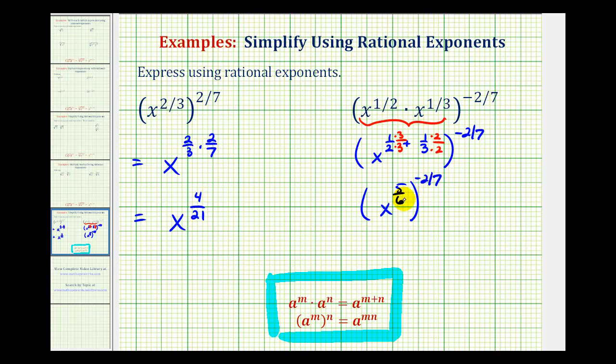And again, now notice how we have a power raised to a power, so now we're going to multiply the exponents, like we did in the first example. So we'll have x raised to the power of five-sixths times negative two-sevenths.